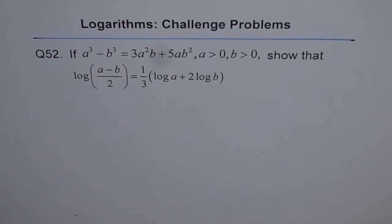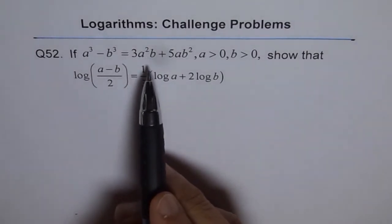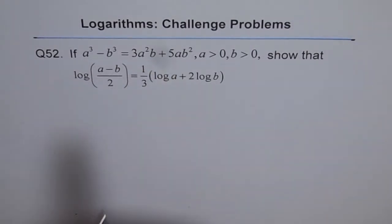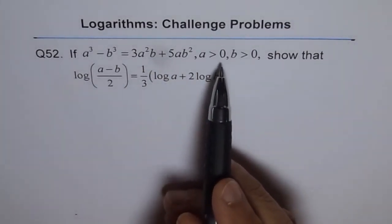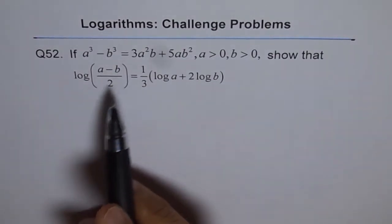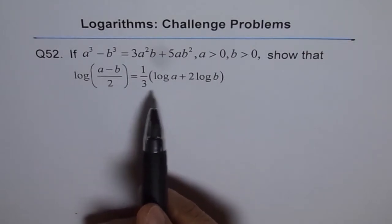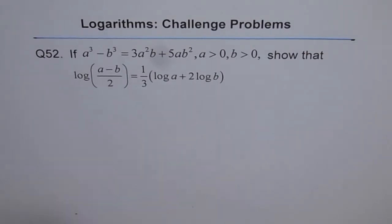Question 52. If a cube minus b cube equals 3a square b plus 5ab square, where a is greater than 0 and b is greater than 0, show that log of a minus b over 2 is equal to 1 over 3 log a plus 2 times log b.